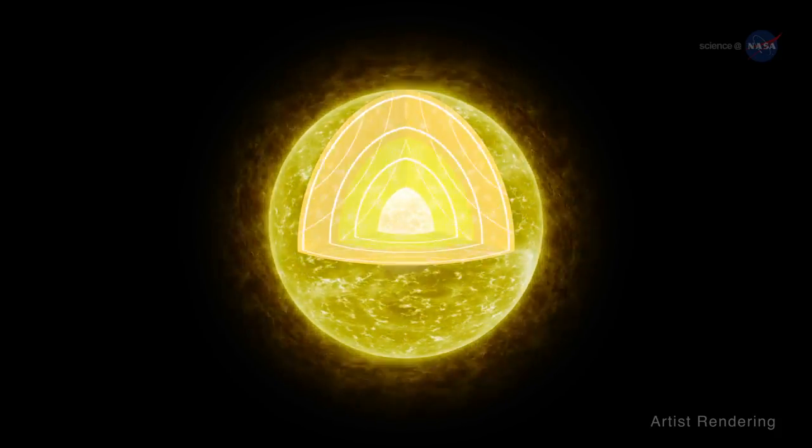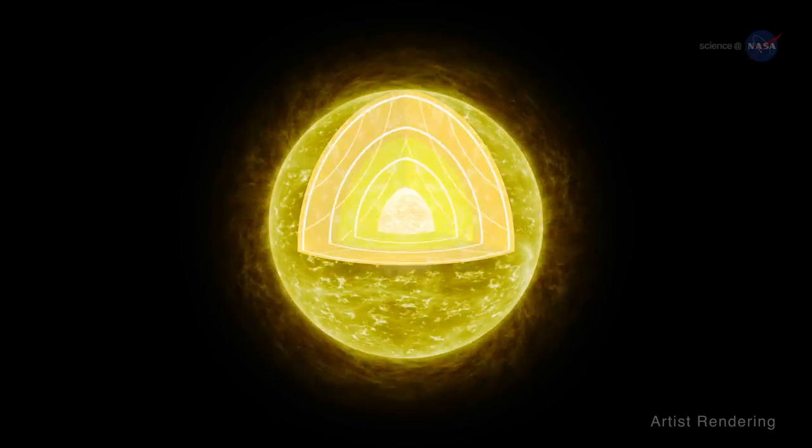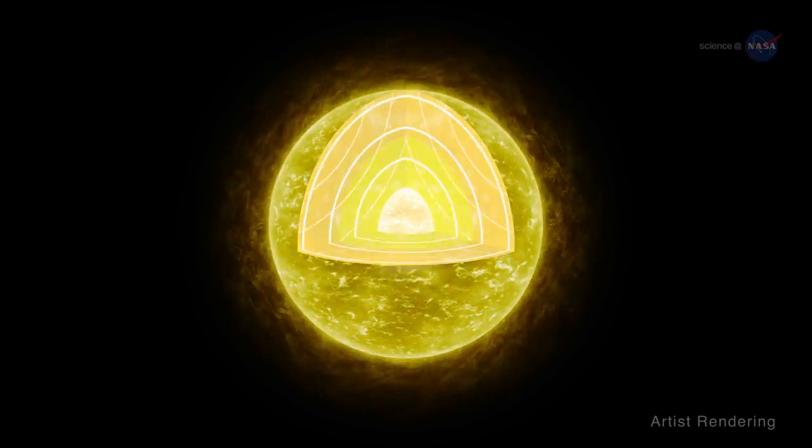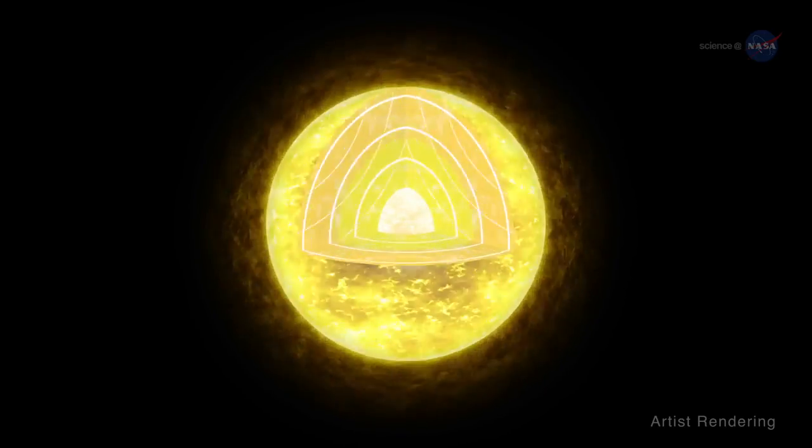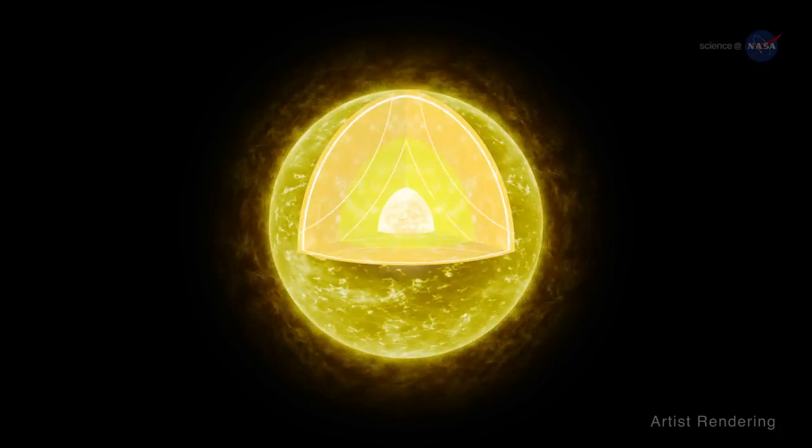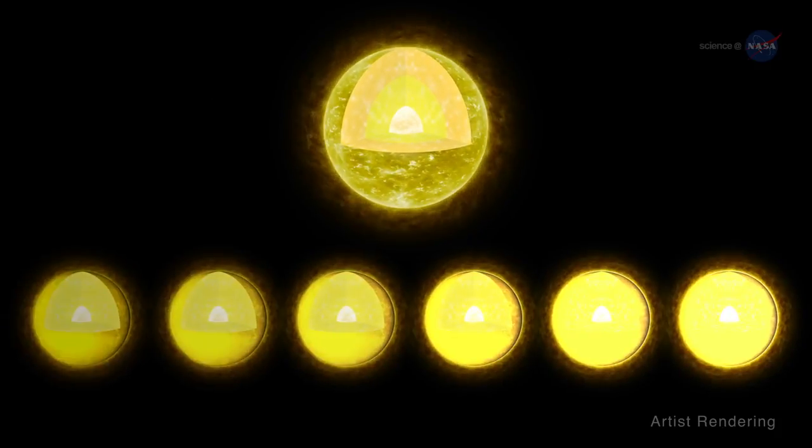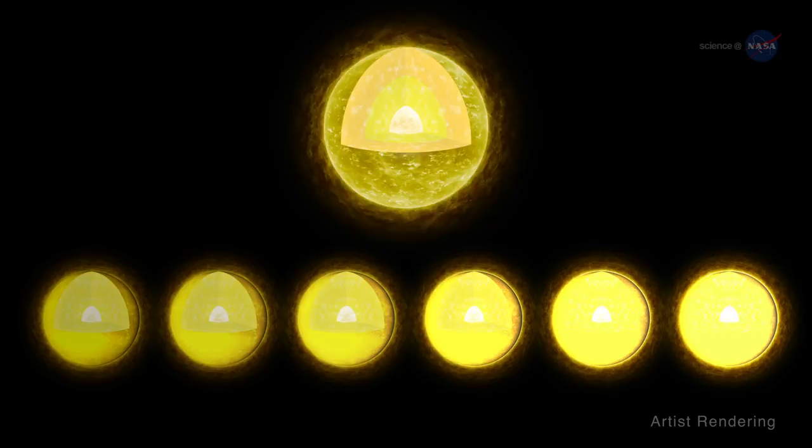Stars are rumbling, noisy spheres of hot gas. Sound waves bounce around the interior and cause the stellar surface to vibrate, much like the head of a drum. These vibrations reveal themselves as fluctuations in a star's brightness.